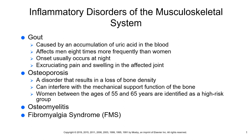They may also check synovial fluid and find urate crystals present. Medical management includes different types of drugs: colchicine (anti-inflammatory), indomethacin (anti-inflammatory), corticosteroids (anti-inflammatory), allopurinol (decreases uric acid production), and probenecid (increases uric acid secretion by the kidneys to decrease uric acid levels).